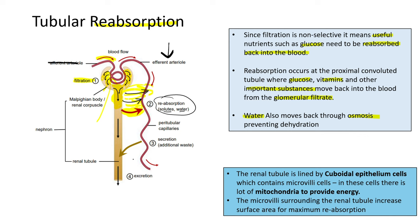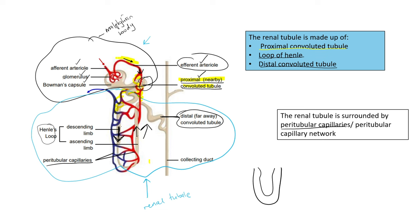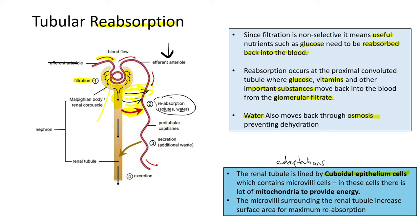They may also ask you about the adaptations of the renal tubule for tubular reabsorption — that is, what structural features make the renal tubule a suitable place for absorption. First of all, the renal tubule is lined by cuboidal epithelial cells. These cuboidal epithelial cells line the entire renal tubule — the whole section highlighted in blue.